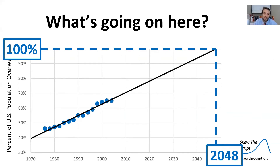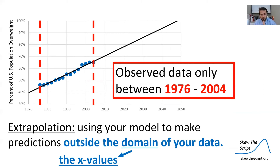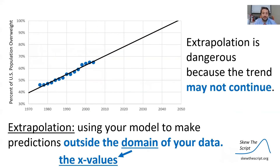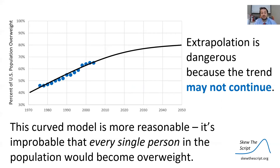What's going on here? That sounds like an interesting claim. What's happening is extrapolation — using your model to make predictions outside of the domain of your data. Remember, domain means x-values. Our observed data is only between 1976 and 2004, and any predictions beyond those years is extrapolation — we're using x-values not within our dataset. Extrapolation can be dangerous for the simple reason that the trend may not continue. The linear model may not hold into the future. For example, the trend might look something like a curve, which is actually more reasonable, since it's unlikely that every single person — 100% of the population — would become overweight over time.